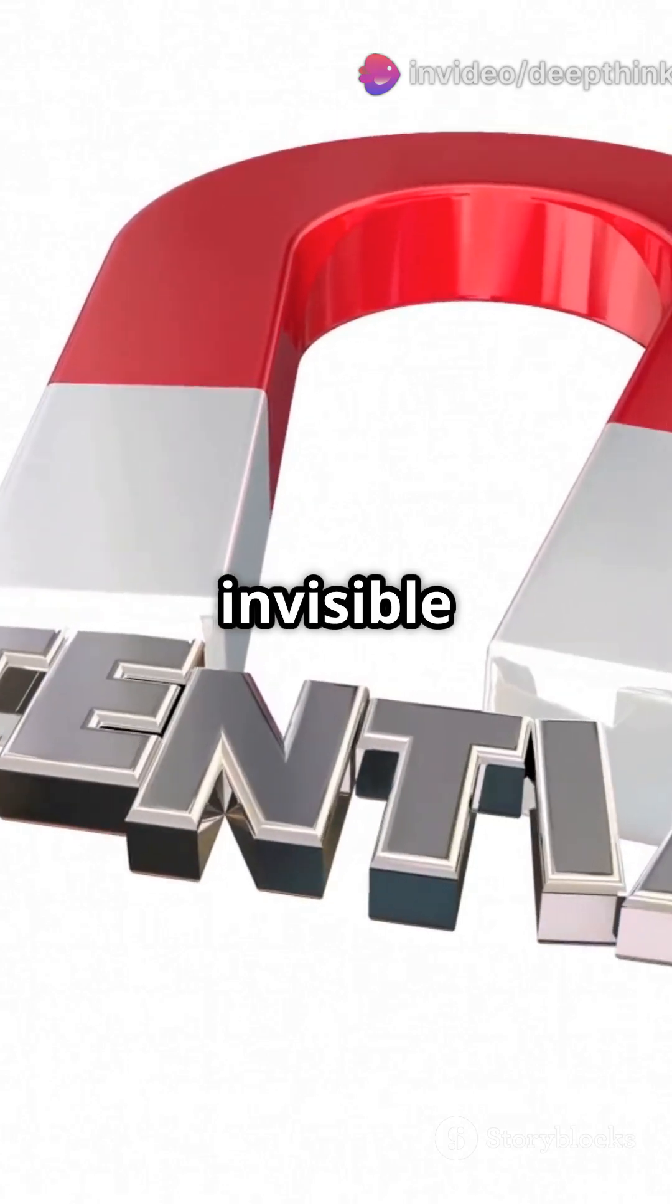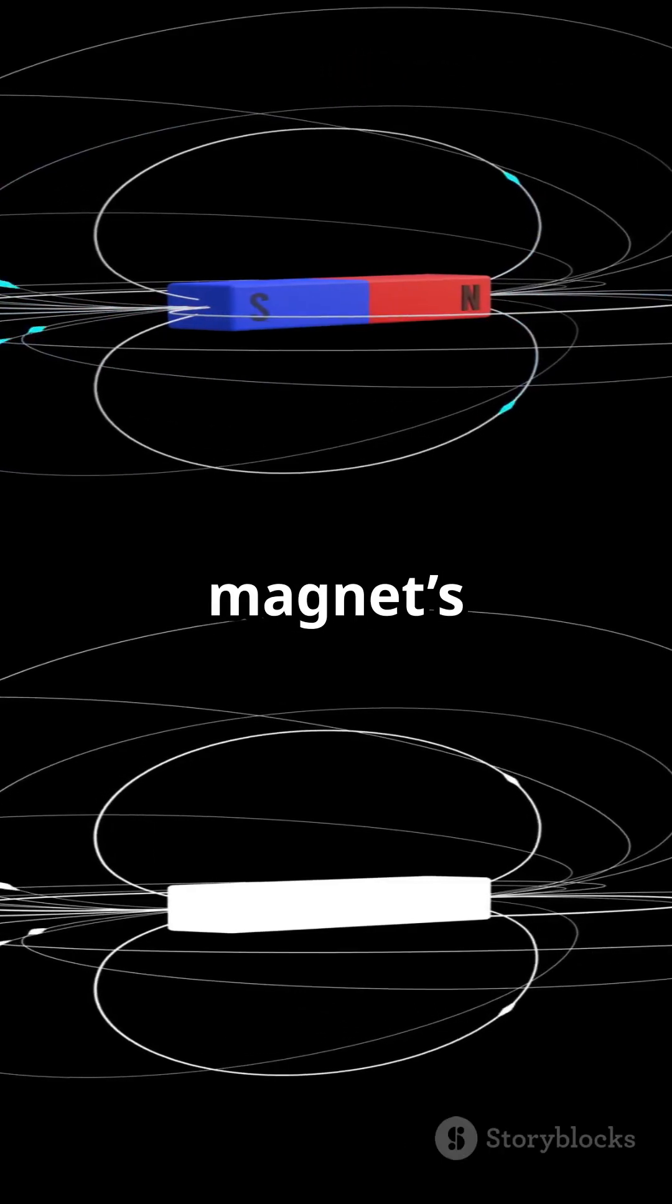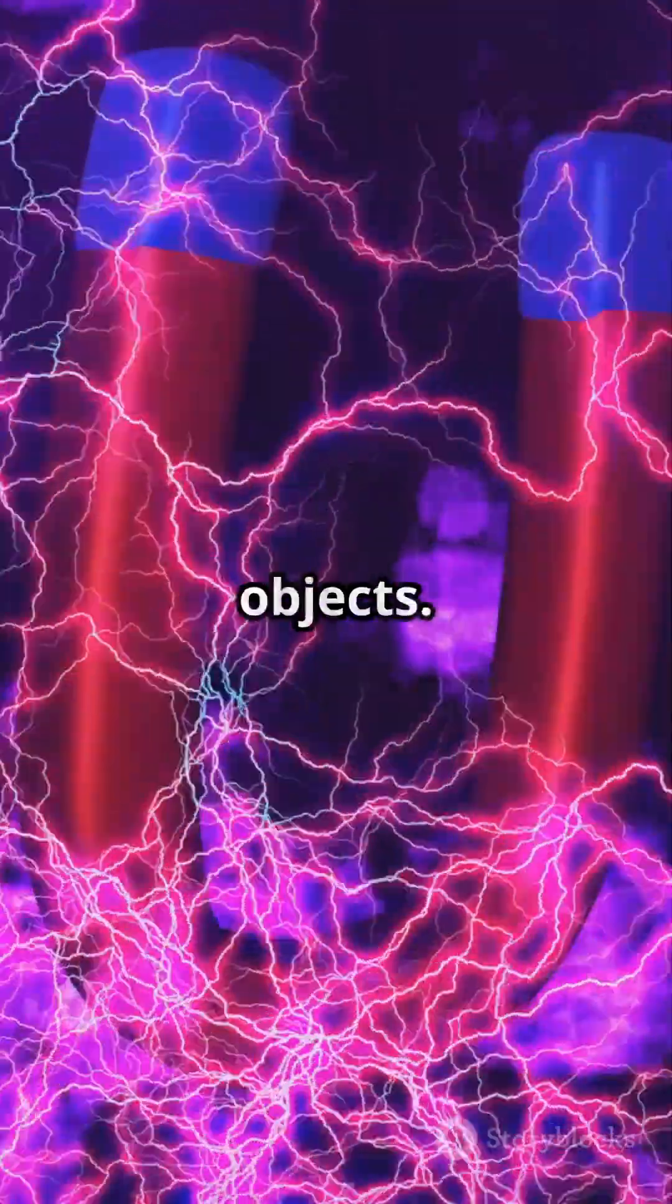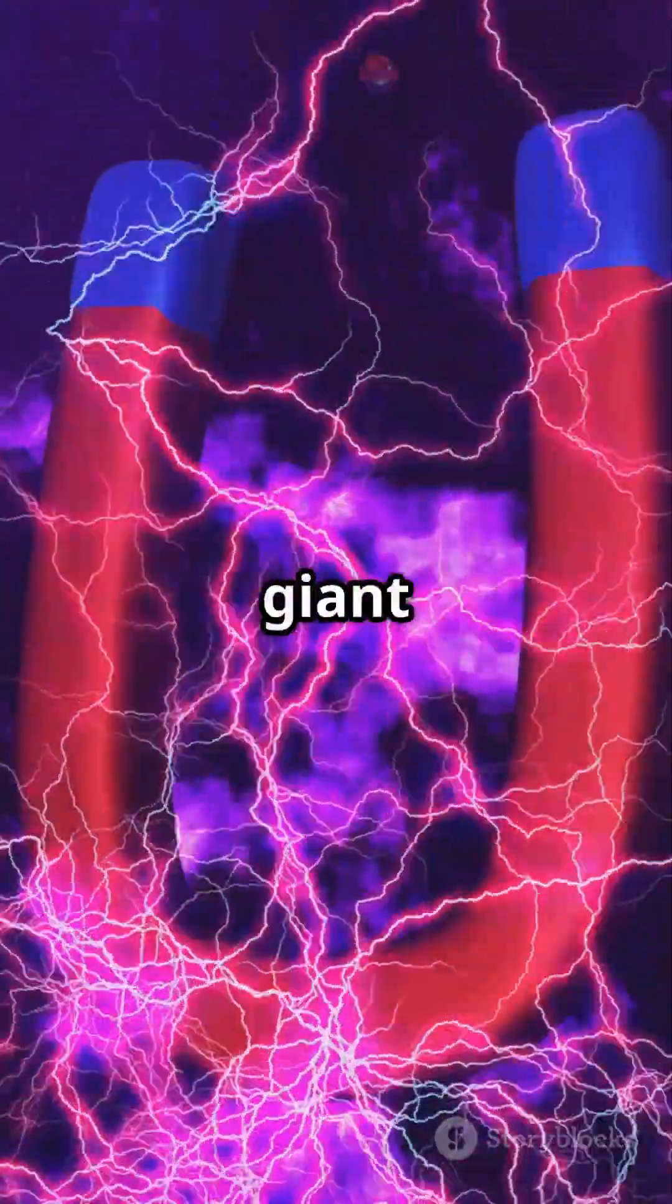This creates an invisible magnetic field that flows from the magnet's north pole to its south pole. That's what pulls or pushes magnetic objects. Even Earth is a giant magnet.